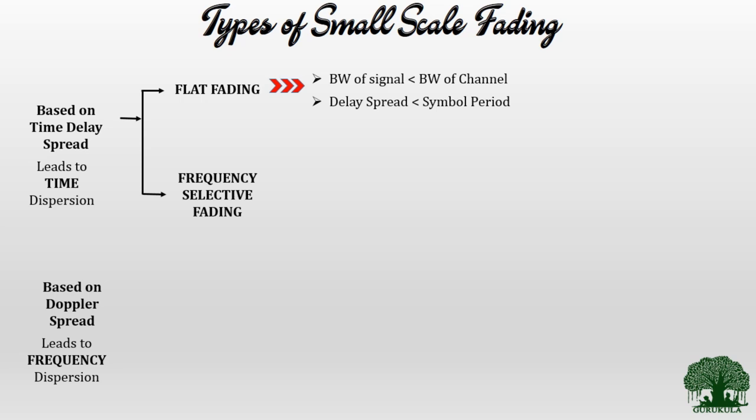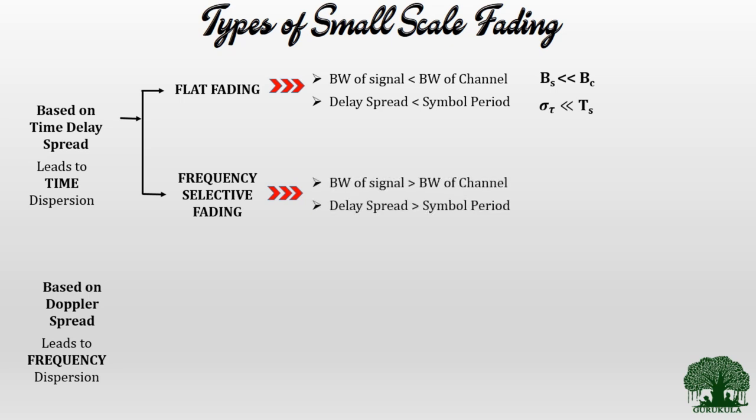In symbolic notation, flat fading occurs when B_s < B_c and σ_τ < T_s, where B_s is the signal bandwidth, B_c is the channel bandwidth, σ_τ is the delay spread, and T_s is the symbol period. Frequency selective fading is the opposite: it occurs when B_s > B_c and σ_τ > T_s.